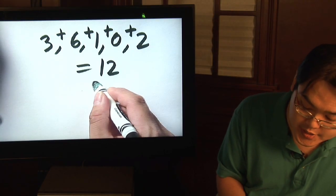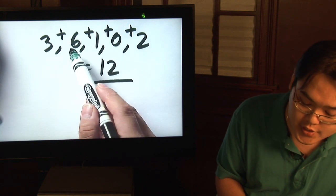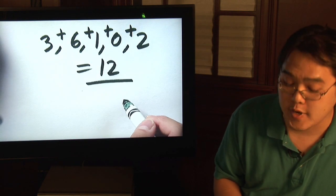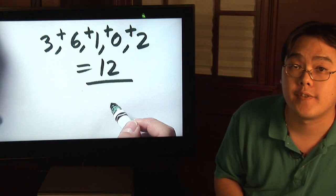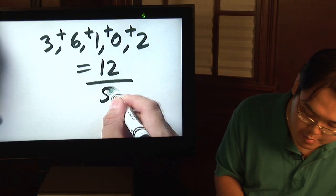What you're going to do after that is divide by how many numbers you actually have. In this case, 3, 6, 1, 0, and 2 obviously make up five numbers. So to find the average of the five figures that you have, just take the 12 that you found earlier and divide by 5.